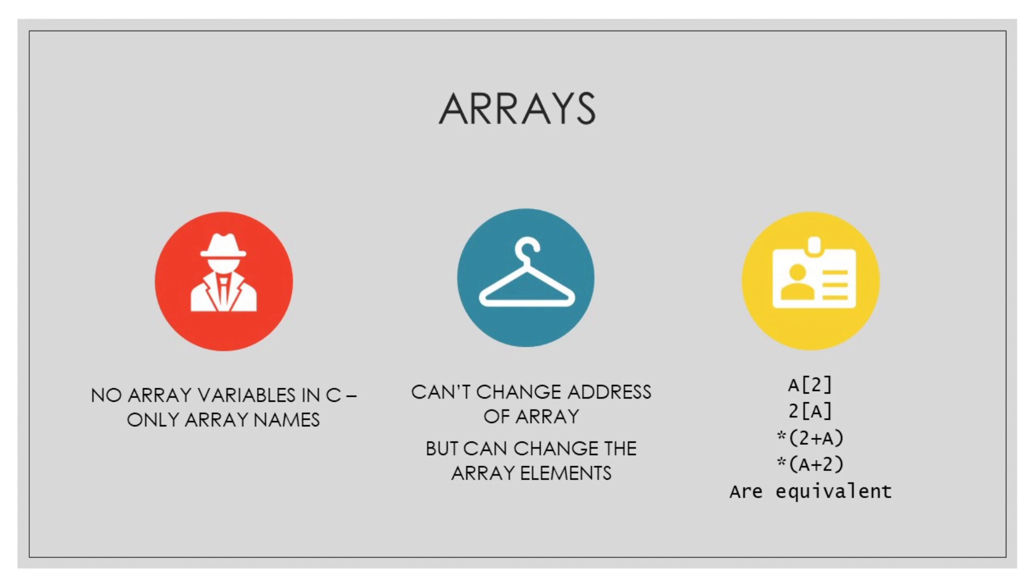The address is allocated by the operating system. We are not concerned with the address and we don't want to change the addresses. But we can change the values of the array elements. There are other ways of accessing array elements as well. You can access like 2 square bracket inside we can write a. We can also access value at asterisk. Inside we can write 2 plus a or a plus 2 as well. All these values are equivalent.